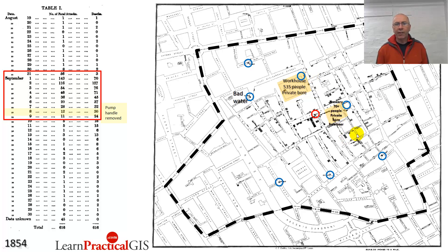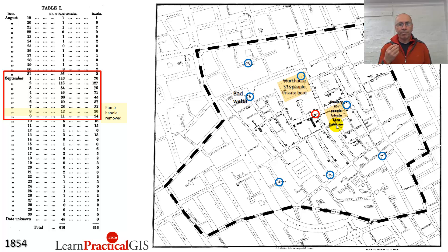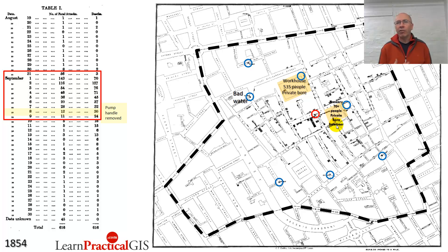The brewery had 70-odd people working there and only a small number of deaths compared to the surroundings. Why? Well, firstly, they had their own pump. And secondly, all staff had access to free beer. That sounds like a really good place to work! But beer had a very significant role in society in those days — because it was brewed, it was a certain guarantee that the water quality would be far better than what you might get out of a well. So it was a safer fluid to drink.